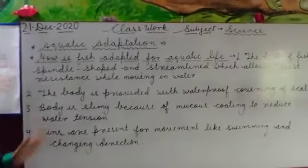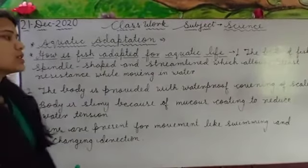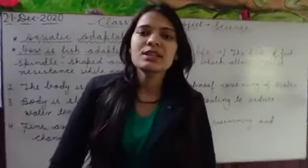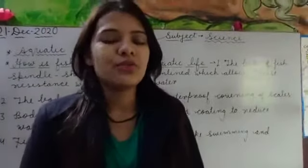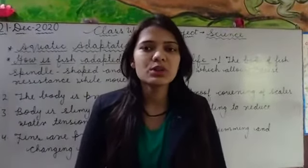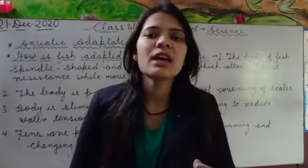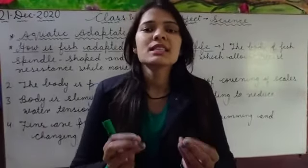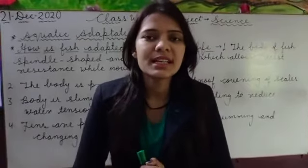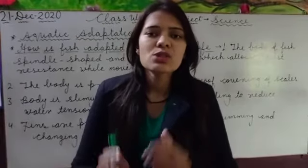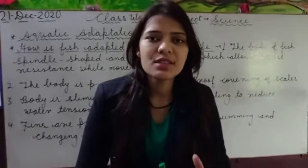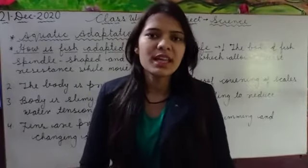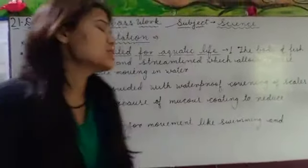The third point is body sliminess because of mucus coating to reduce water tension. The body of the fish is covered by scales and also has a mucus coating. This slimy substance is secreted by the body and helps to reduce water tension.